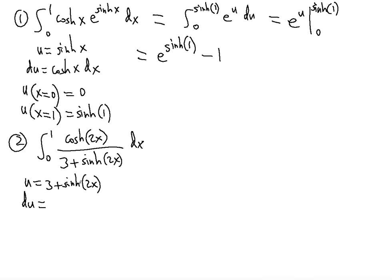du is going to be 0 plus cosh 2x times the inside which is 2, so it's just 2 cosh 2x dx.